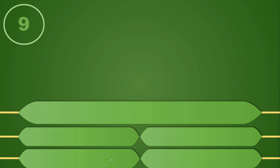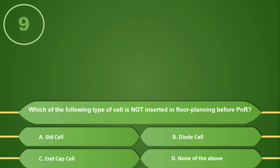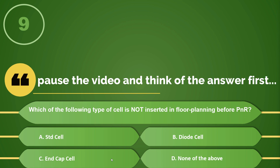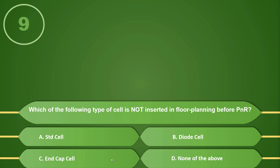The 9th question: Which of the following types of cells is not inserted during floor planning before PNR? Options: A) Standard cell, B) Diode, C) End cap cell, or D) None of the above. If your answer is A, standard cell, then you are correct. Diodes and end cap cells are inserted in the floor planning stage, while standard cells are inserted in the PNR stage.